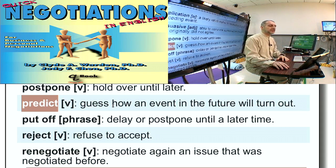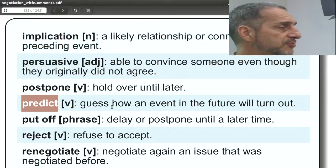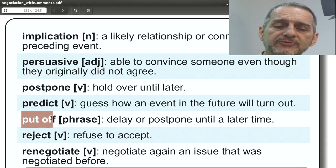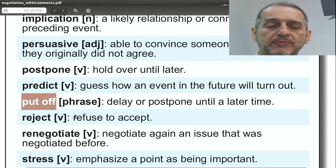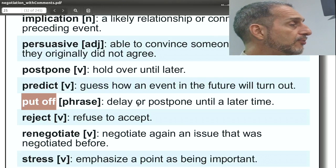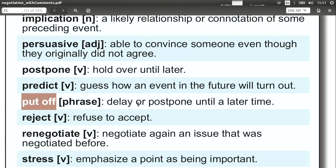'Predict,' like prediction, means you can tell something about the future — only it's a verb here. For example: 'We predict this product will be very successful in the marketplace.' Similarly, 'put off' is again the idea of delaying or postponing: 'We're going to put off our decision until tomorrow morning.' You could also ask the other side: 'Can you please not put off your decision any longer? We need the decision before New Year's.'